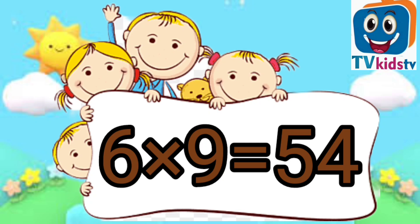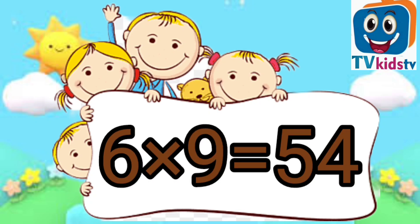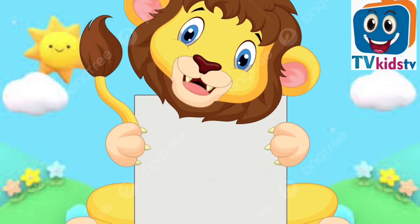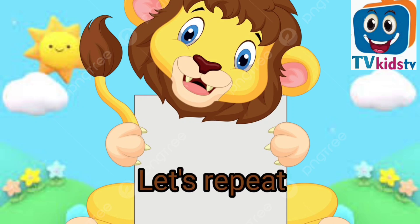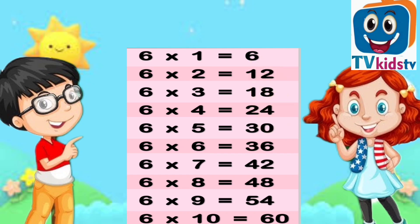Six eights are forty-eight. Six nines are fifty-four. Six tens are sixty. Let's review: six ones are six, six twos are twelve, six threes are eighteen, six fours are twenty-four, six fives are thirty.